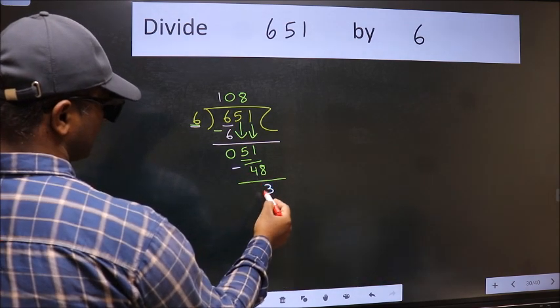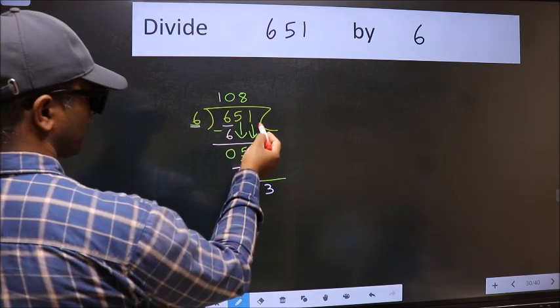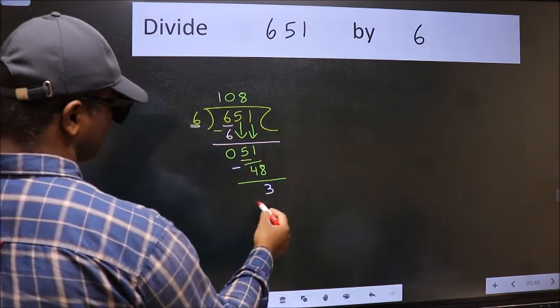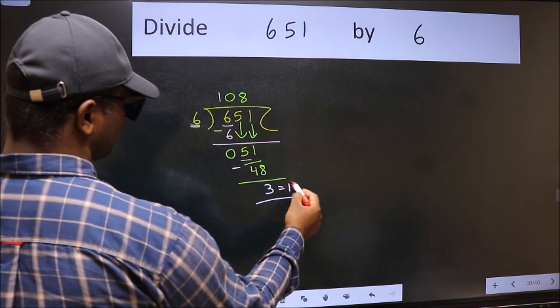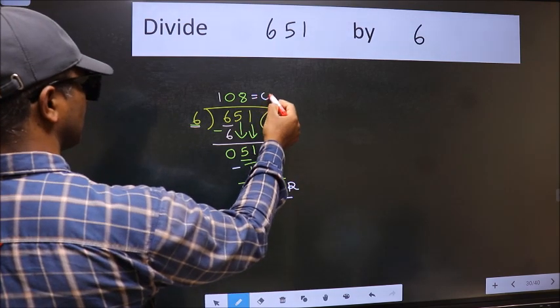We get 3. No more numbers to bring down, so we stop here. This is our remainder and this is our quotient.